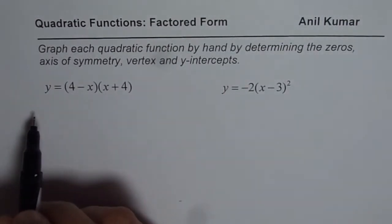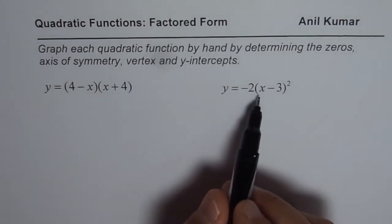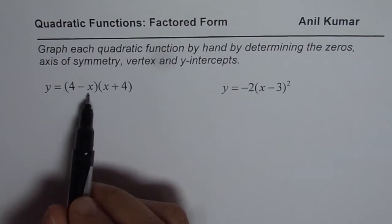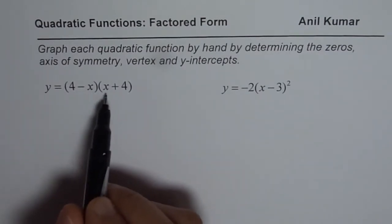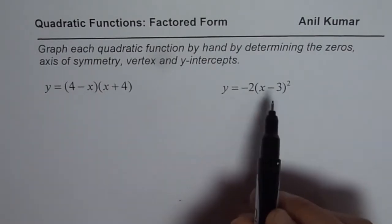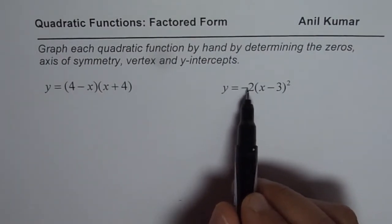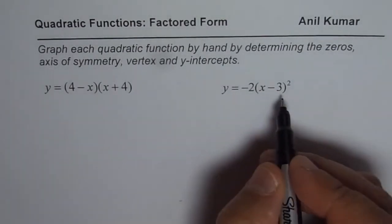Let me show you how to find these characteristics. We have two very special equations here. First one which you see is (4 - x)(x + 4). We have kind of similarity here, so this is symmetric about the y-axis. And here what we have is -2(x - 3)². This is unique since it has only one x-intercept.